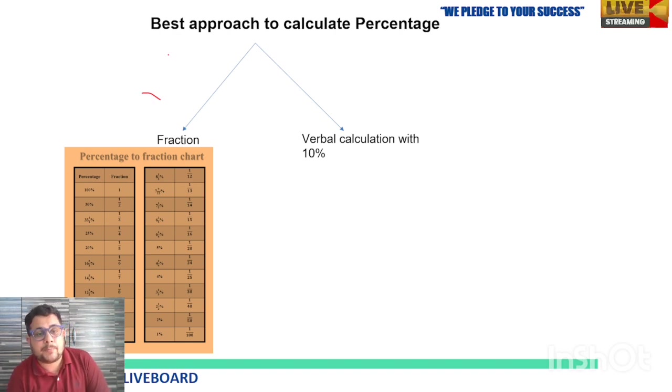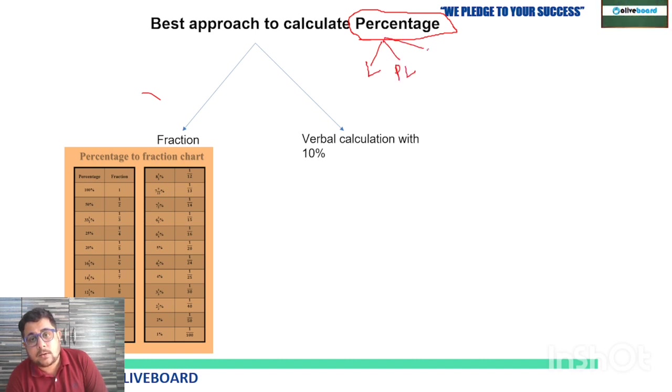Today we are going to learn the best approach to calculate percentage. Percentage is the most important topic of your quant section because many chapters depend on it: percentage, then profit and loss, CI and SI, data interpretation, mixture and allegation, and other chapters. There are two ways you have to remember.